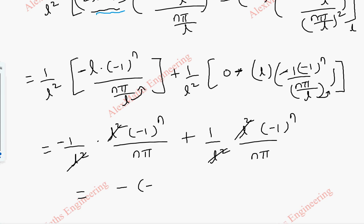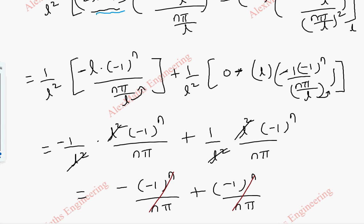The remaining terms are minus (−1)ⁿ by nπ plus (−1)ⁿ by nπ. Both are the same but with opposite signs, so they cancel completely. Therefore bₙ = 0.